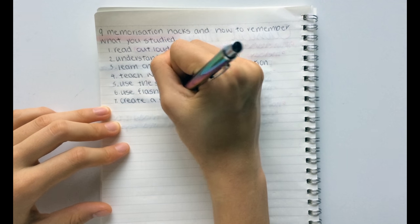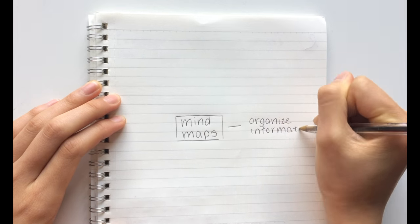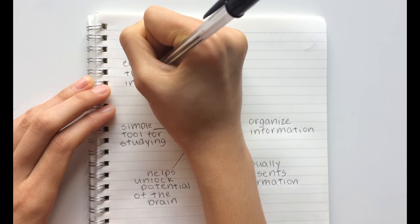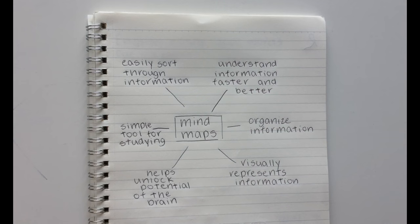The seventh hack is to create a mind map. Seeing all the information written out visually as a mind map helps you link all the information together so you can truly understand and not just know.